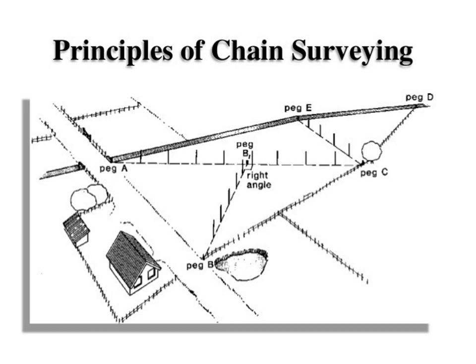We divide the area into well-conditioned triangles: A-B-B', B-B'-C, A-C-E, and E-C-D. These are the triangles into which the given area is divided. This is called the principle of chain surveying — dividing the given area into a number of triangles so that it is possible to calculate the whole area by adding the areas of the individual triangles.